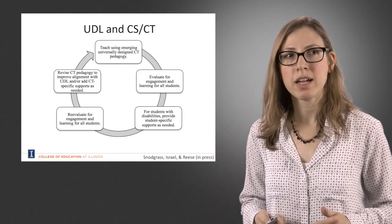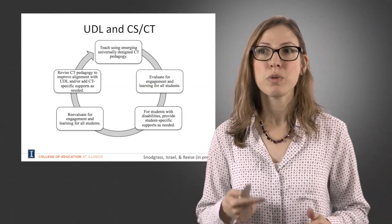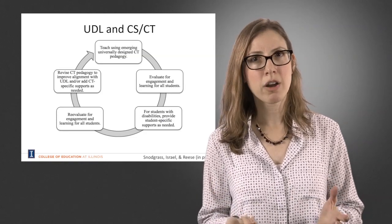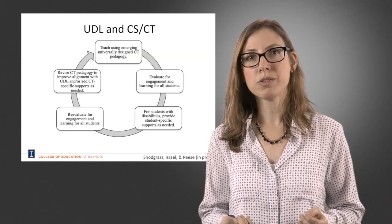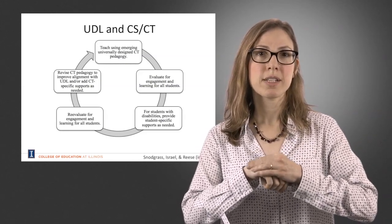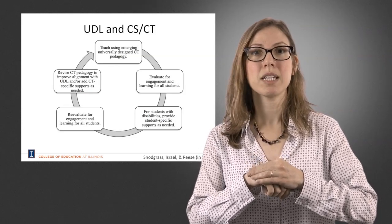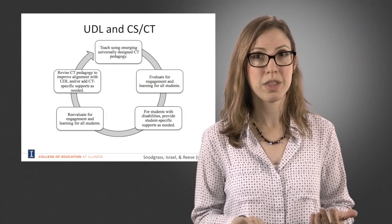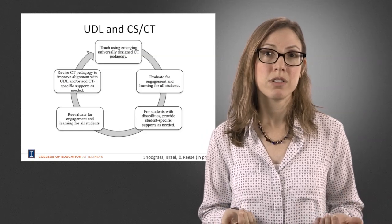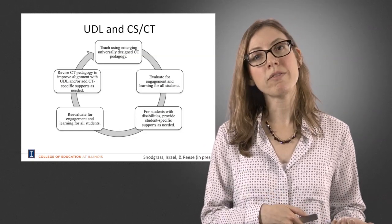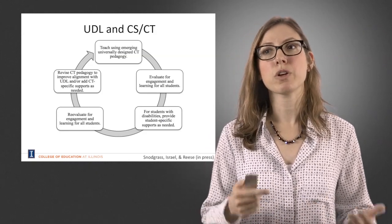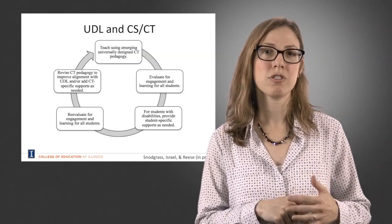If we think about UDL from the perspective of a pedagogical approach, we want to start teaching CS from this very flexible framework, then evaluate whether kids are learning and engaged. For some students with disabilities, we're going to have to layer some level of individualization on top of that. For example, with a student with a significant learning disability, we might need to do additional verbal prompting, or a student with a visual impairment might still need assistive technology. Then we reevaluate and see how learning and engagement are going, and provide additional layers of support if needed.